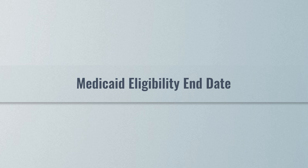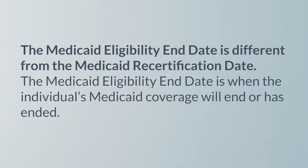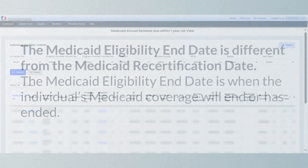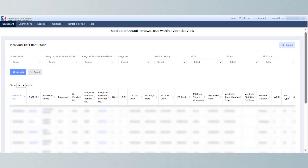The Medicaid eligibility end date is different from the Medicaid recertification date. The Medicaid eligibility end date is when the individual's Medicaid coverage will end or has ended. On the Medicaid eligibility reports, the Medicaid eligibility end date column is positioned between the Medicaid recertification date and service county columns.